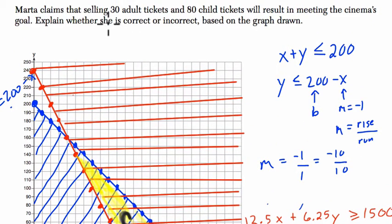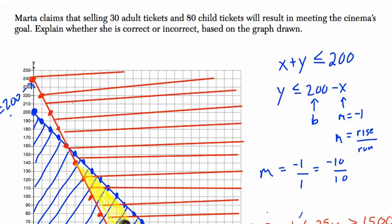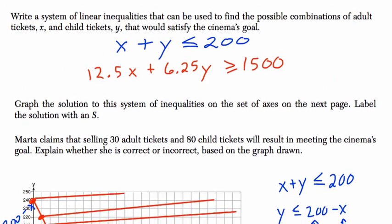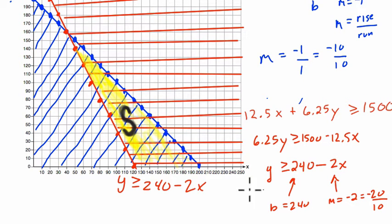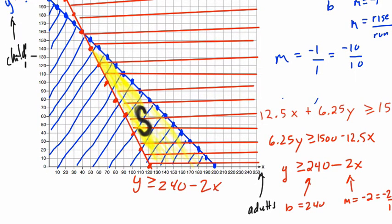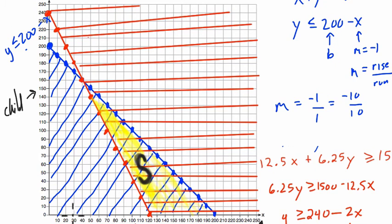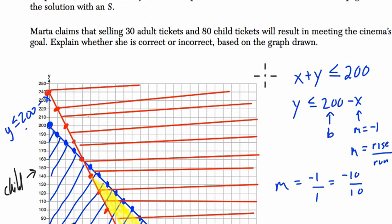Okay, Marta, last part, hang in there. Marta claims that selling 30 adult tickets and 80 child tickets will result in meeting the cinema's goal. Explain whether she is correct or incorrect. Remember that X is adults and Y is child, so X is the adults, that's our adult axis, and Y is the children. The Y axis represents the children. She's saying 30 and 80. So where is that point? 30 and 80 right here. That's the point that Marta's talking about. She's saying that it results in meeting the cinema's goal. It does not.